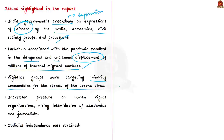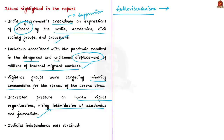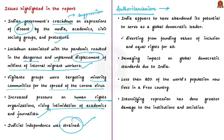Unbelievably, the report notes that rather than serving as a champion of democratic practice and a counterweight to authoritarian influence from countries such as China, the ruling party of India is driving India towards authoritarianism, meaning there is lack of concern for the wishes and opinions of others. Other issues noted include increased pressure on human rights organizations, rising intimidation of academics and journalists, and judicial independence coming under strain. The report concluded that India appears to have abandoned its potential to serve as a global democratic leader and is losing its foundation values of inclusion and equal rights for all.